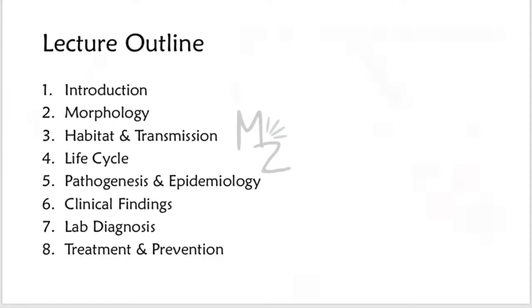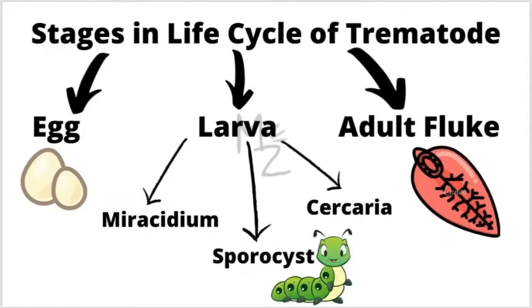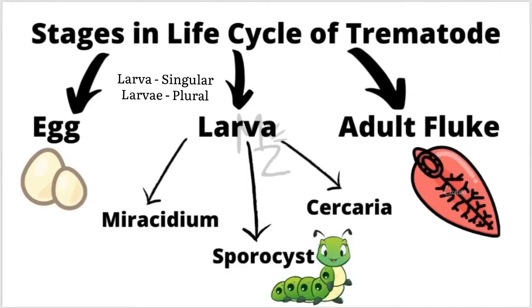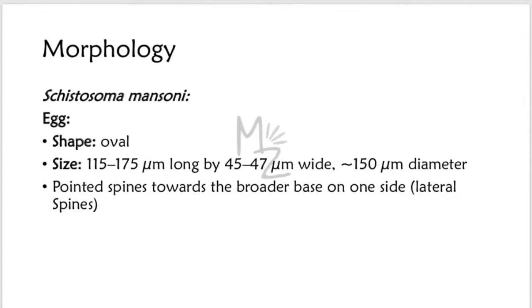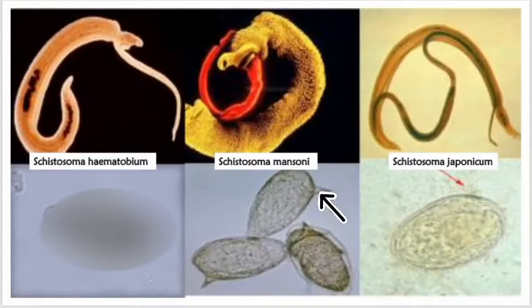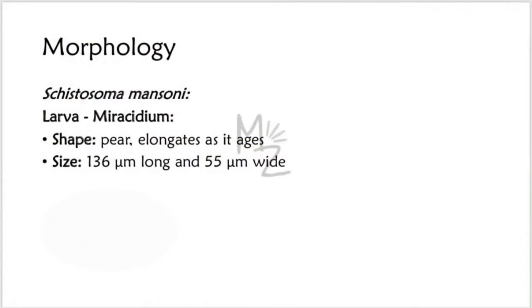Before starting morphology, note that there are certain stages in the life cycle of a trematode: first is the egg, then larvae which exist in three forms — miracidium, sporocyst, and cercaria — and the third stage is the adult fluke. For the morphology of S. mansoni, the egg is oval-shaped, 115 to 175 micrometers long by 45 to 47 micrometers wide, approximately 150 micrometers in diameter. It has pointed lateral spines towards the broader base on one side.